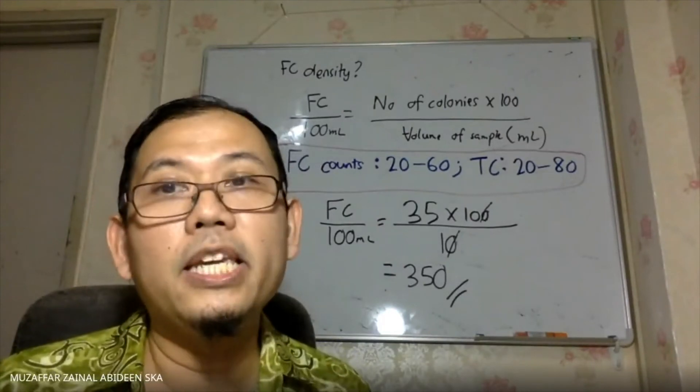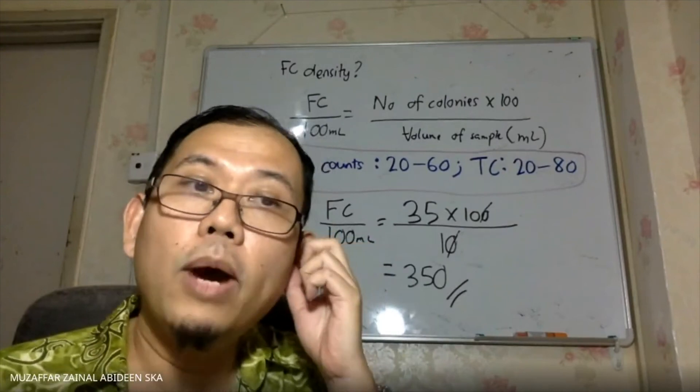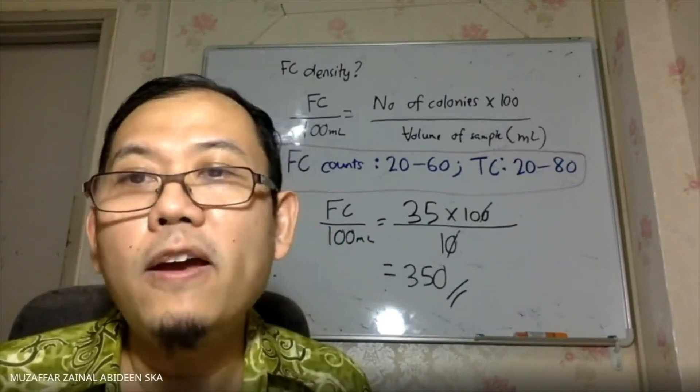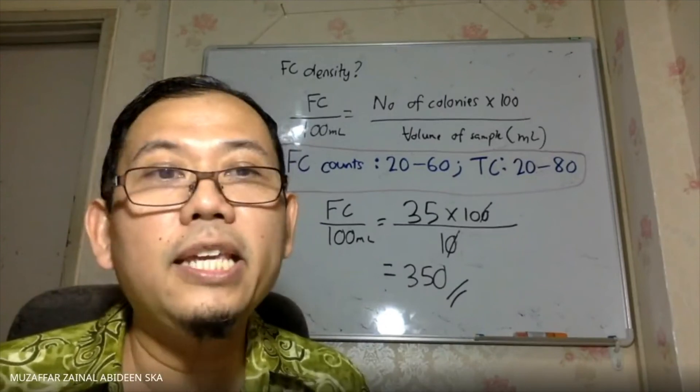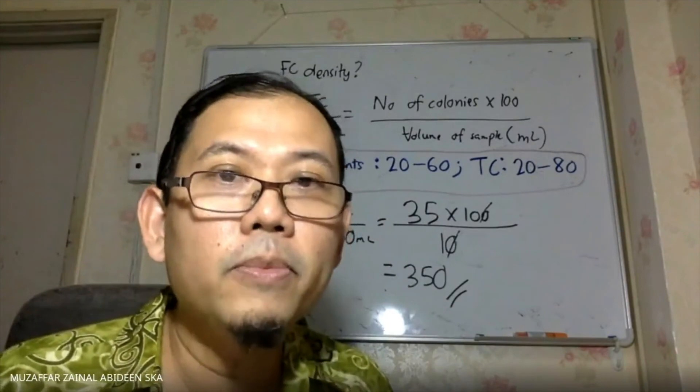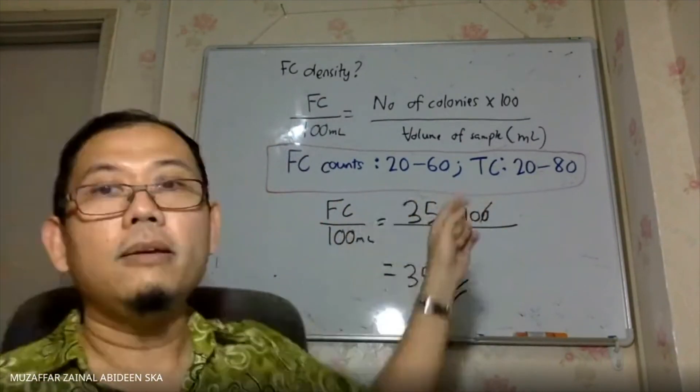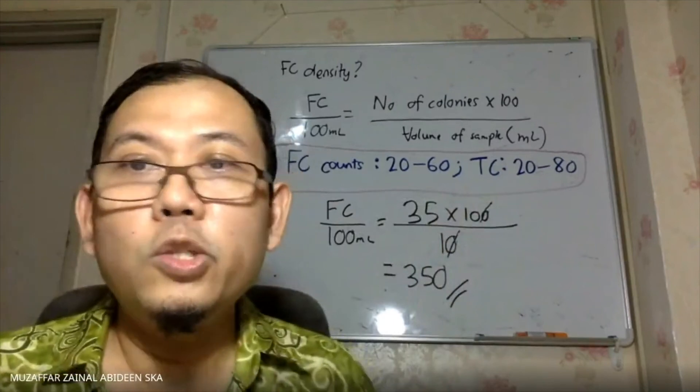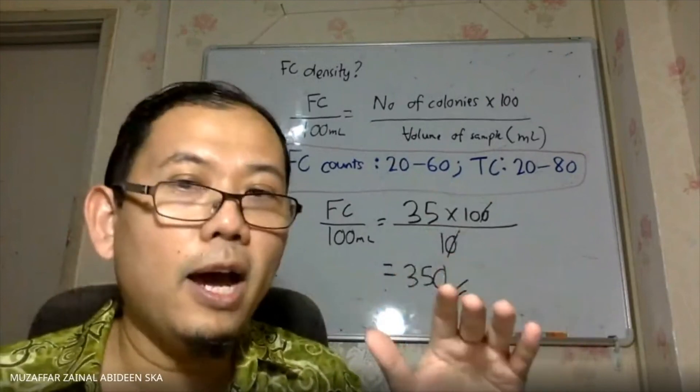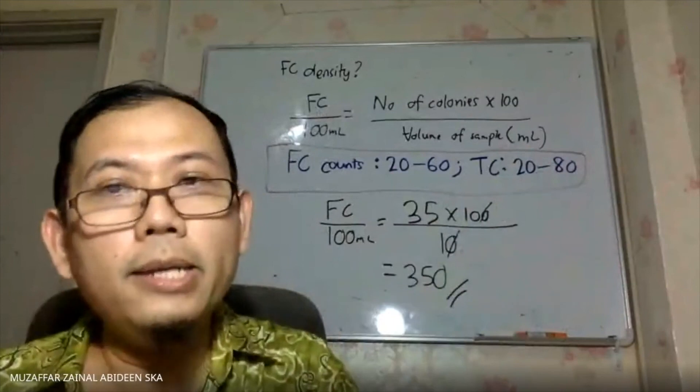If you have more than one giving acceptable results, what you need to do is to do separately. Let's say that for 25 ml instead of giving 89 count, let's say you got 58 count. 58 is acceptable because it's between 20 to 60. So what you need to do is you do it separately, so you have 58 times 100 divided by 25, so you get one result.